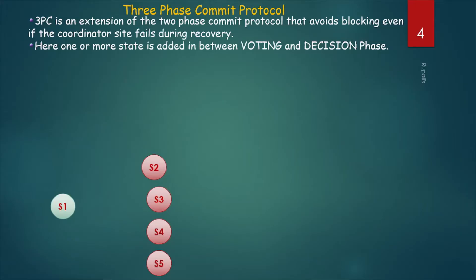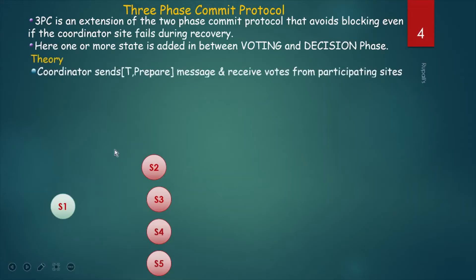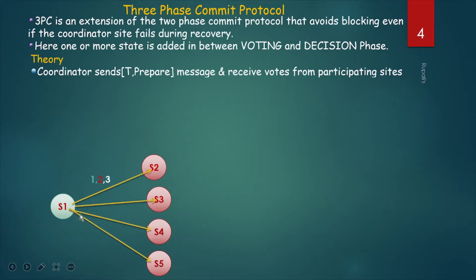That is why it is called the 3-phase commit protocol. First, we will learn the theory. The coordinator, which is S1, sends a T-prepare message and receives votes from all participating sites.